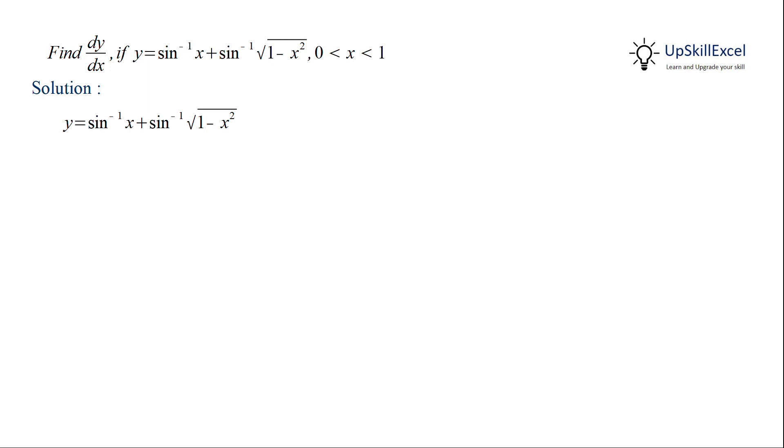To find dy by dx, we can differentiate both sides. Now we know that the derivative of sine inverse x is equal to 1 upon under root of 1 minus x square.